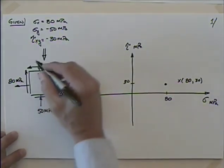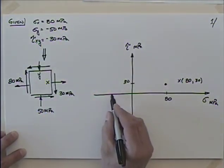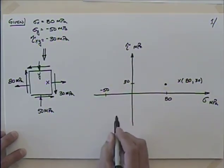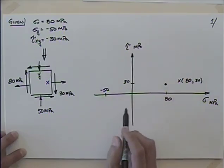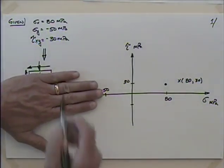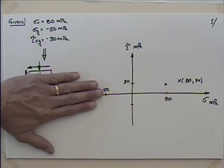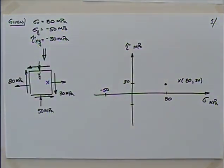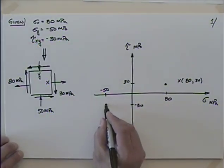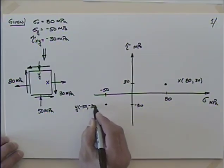On the y-face, it's plotted in compression, so that would be a negative number — over here at minus 50. We know by default we have to be minus 30, but let's check: if I look at the y-face, where does this arrow tend to rotate the element? Counterclockwise, right? So we would be minus 30. The y-point is minus 50 and minus 30.